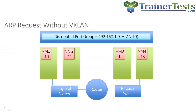I have four ESXi hosts: two of them are connected by a switch, then there's a router in the middle, and the other two hosts are connected by a different physical switch. So let's talk about what happens when we issue an ARP request in this scenario. VM1, VM2, VM3, and VM4 are all connected to port groups on this vSphere distributed switch.